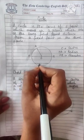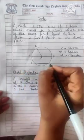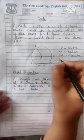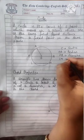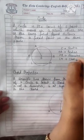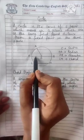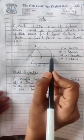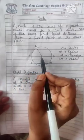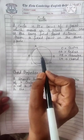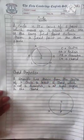The line segment LM is the chord of the circle. If you observe, the diameter is the longest chord of the circle, and OA is the radius.